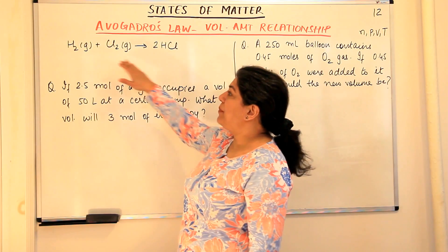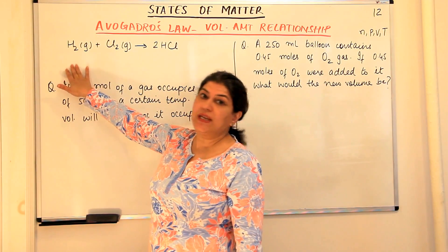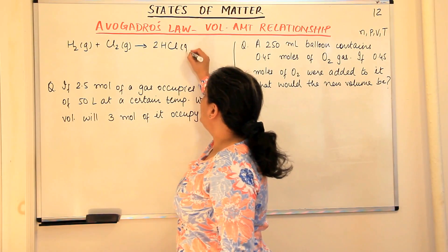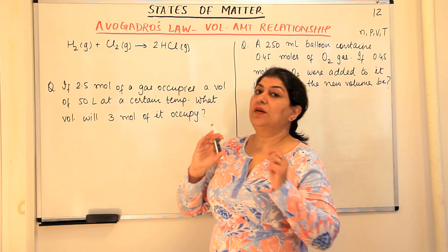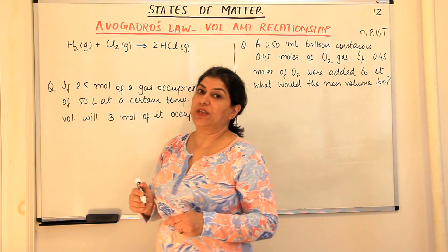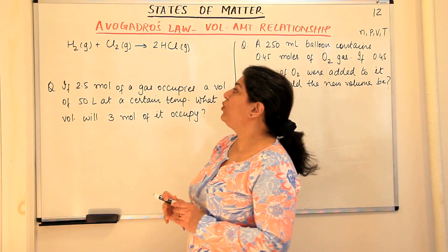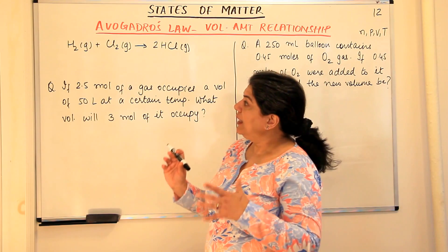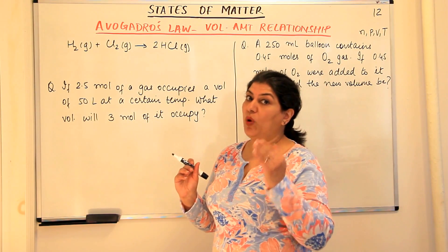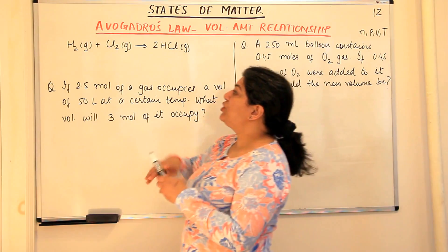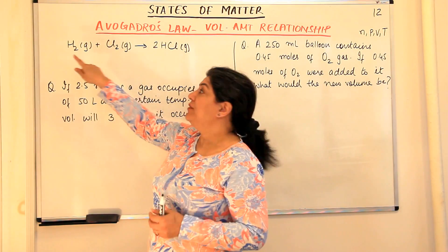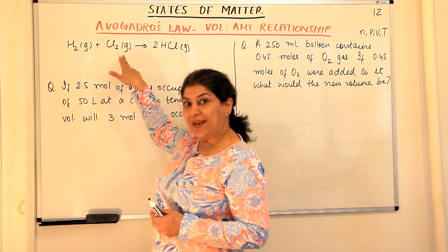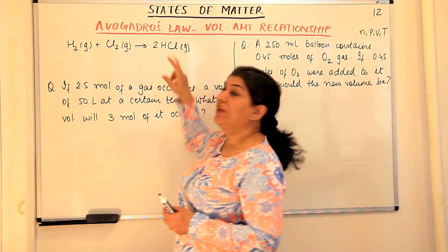Let us take an example: the reaction where hydrogen gas combines with chlorine gas to give hydrogen chloride gas. For this reaction, one molecule of hydrogen gas combines with one molecule of chlorine gas to give two molecules of hydrogen chloride. In terms of number, the ratio is 1:1:2 — one molecule of hydrogen combined with one molecule of chlorine to give two molecules of HCl.